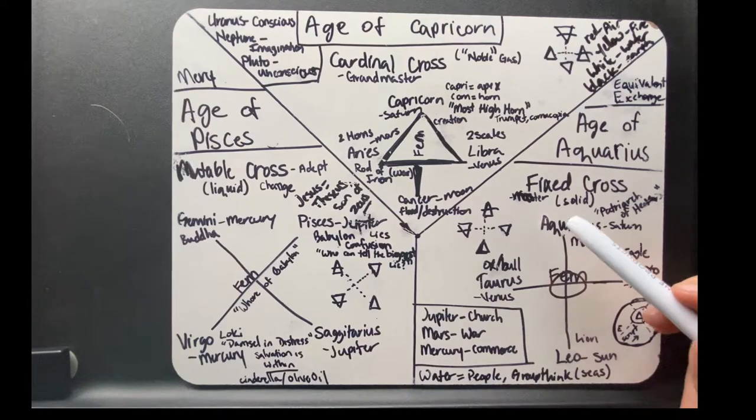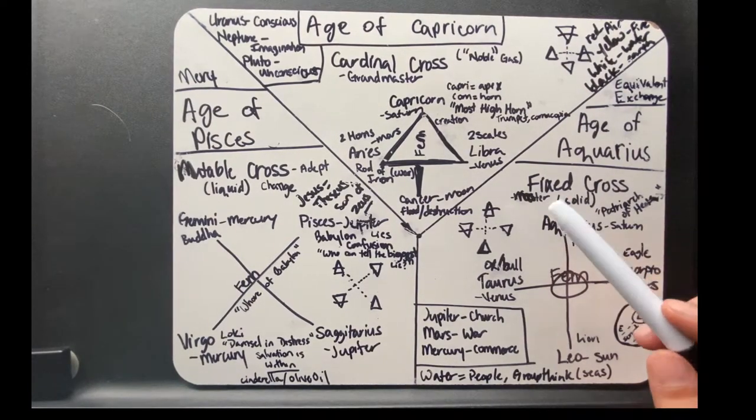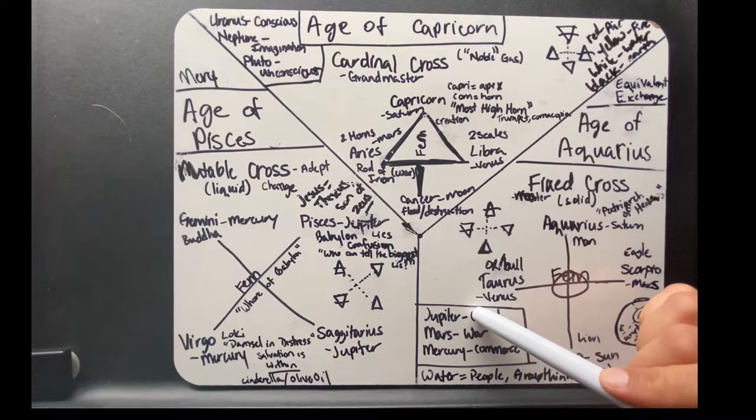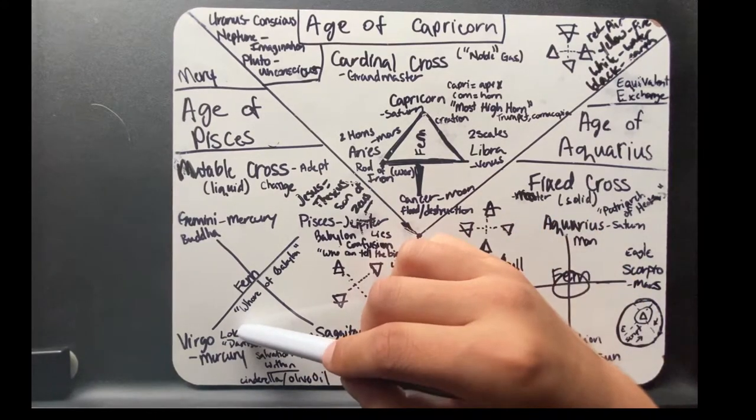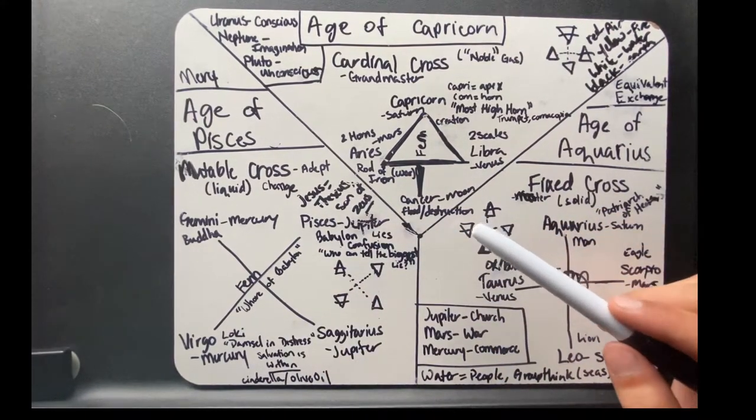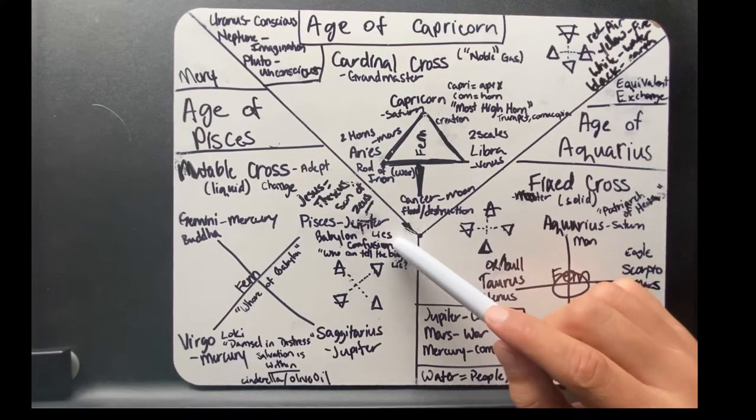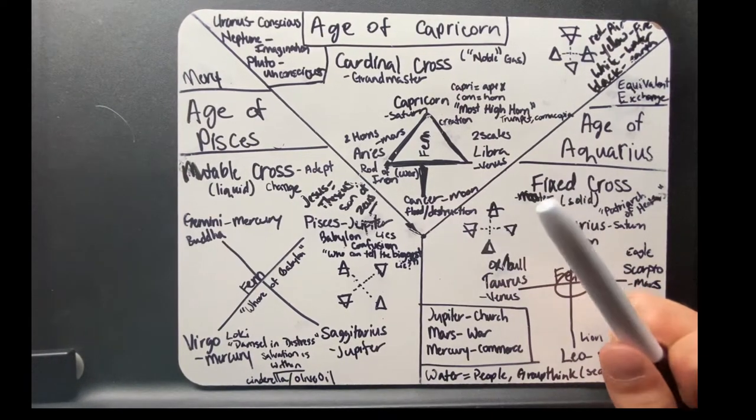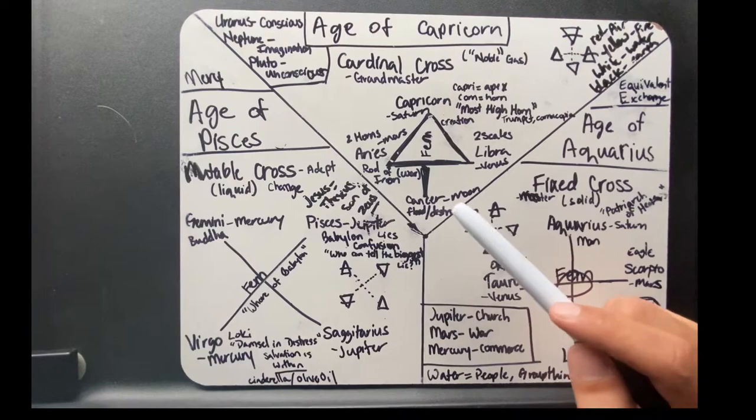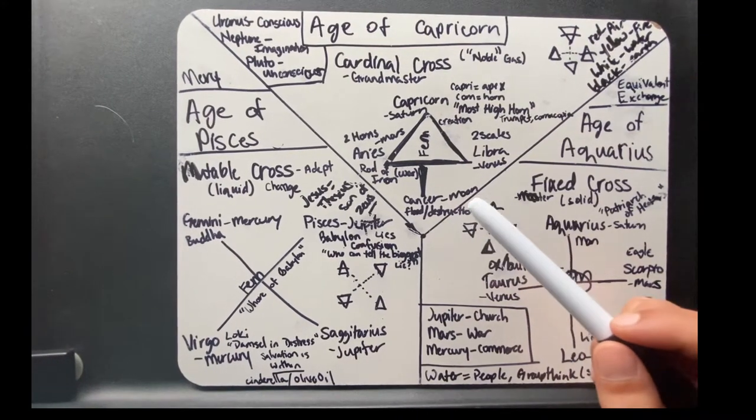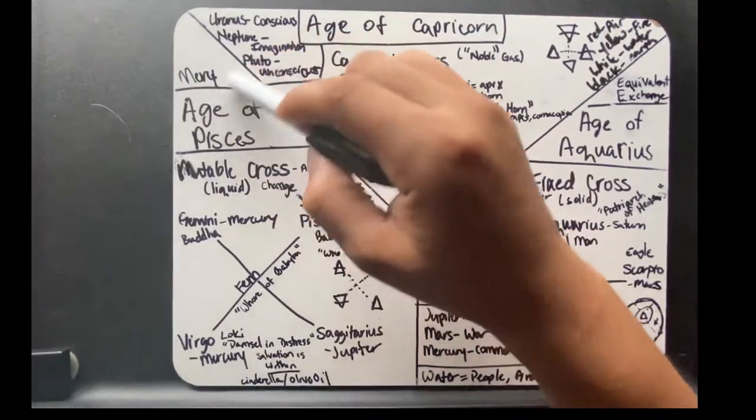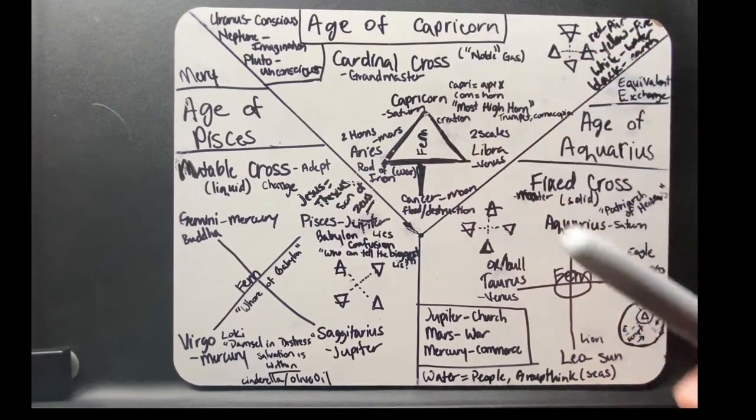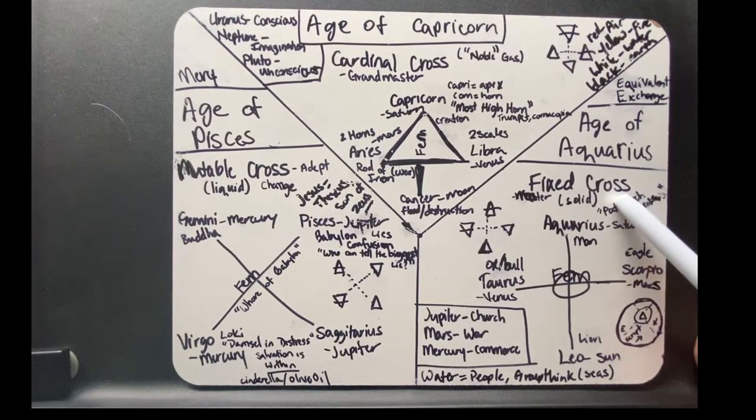They try to confuse you and say Saturn is Satan and Jupiter is God, when Jupiter is working with the trickster to fool you, to confuse you. God works in mysterious ways, but the devil is a cunning fucker. That's why you see many religions of today with conflicting morals—God, the supposed god of mercy, hates gays, stuff like that. Anyways, this fixed cross should look familiar.